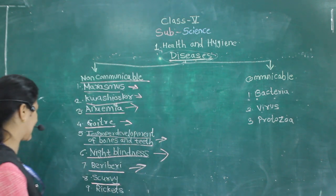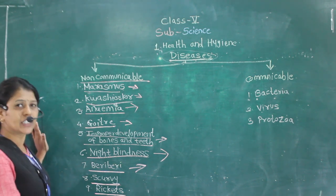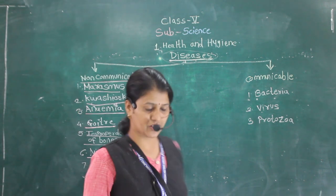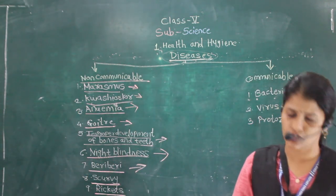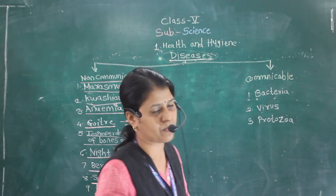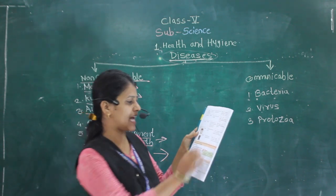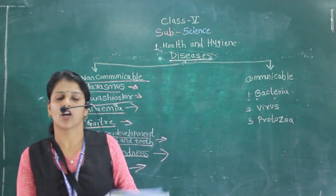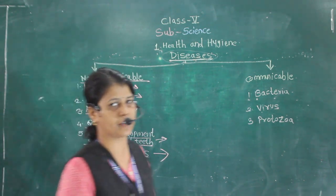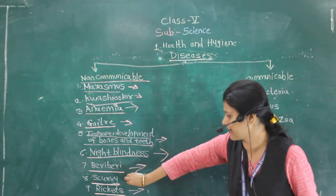The last deficiency disease is rickets, caused due to the lack of vitamin D. Symptoms include softening of bones and bending of the spine — your spine totally bends. To treat this, the person should be given milk and fish, which are rich sources of vitamin D.